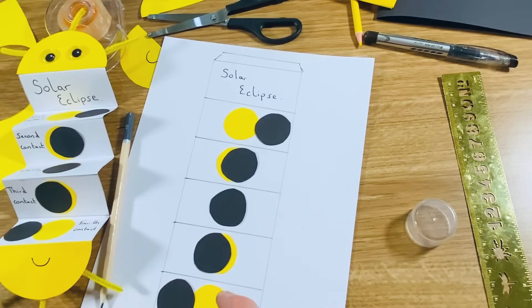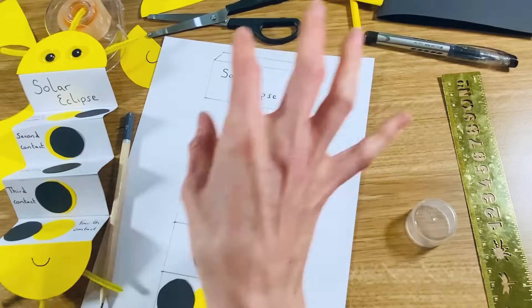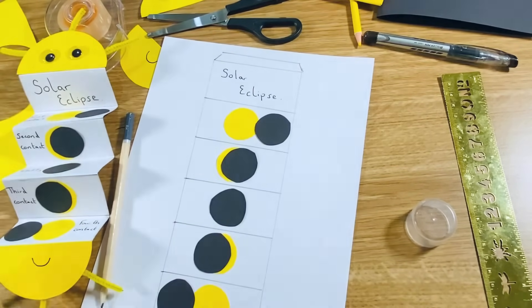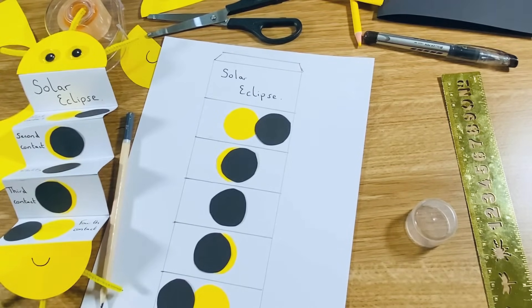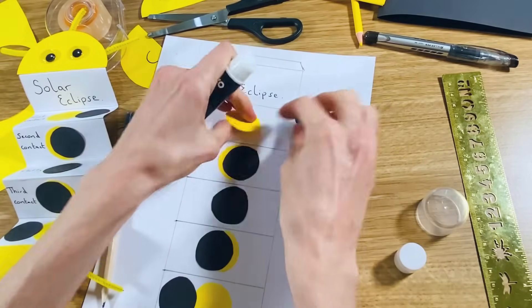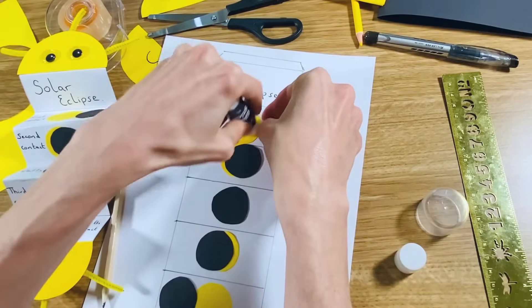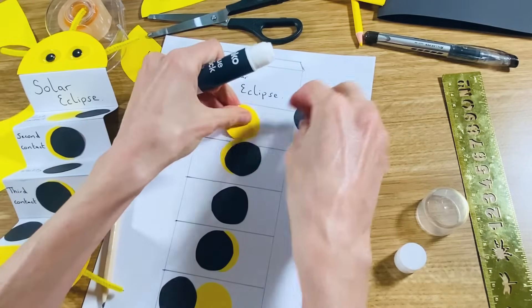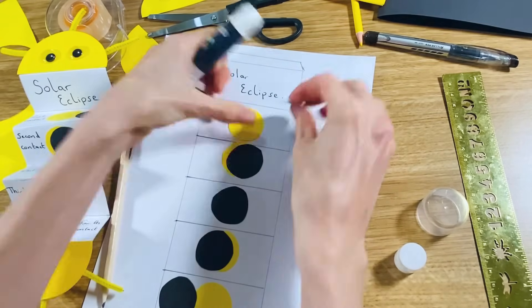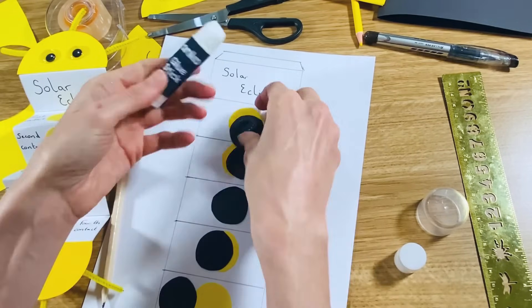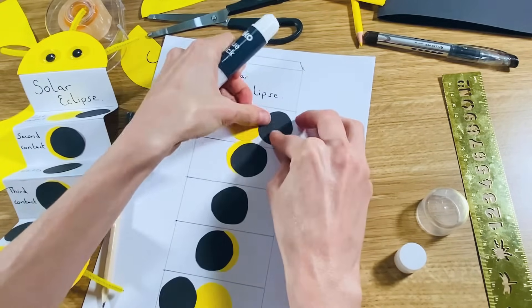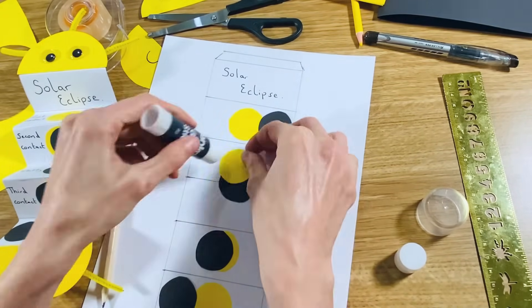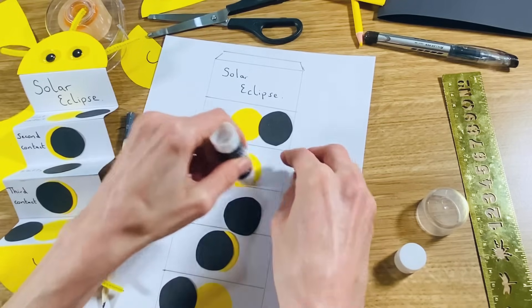So once you've got your stages in order, it's then time to glue. It's always best to make sure that they're all in the right places before you add any glue. So I'm just going to put a bit of glue on each of the circles, stick them in place, and we will be writing on here as well what each stage is called.